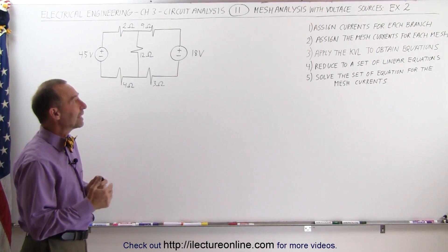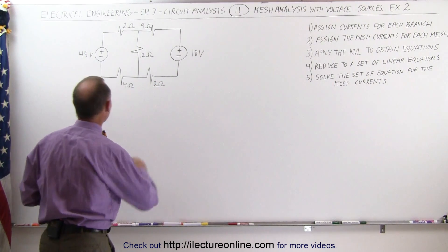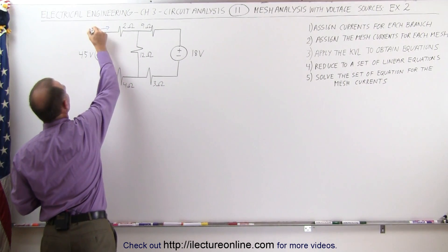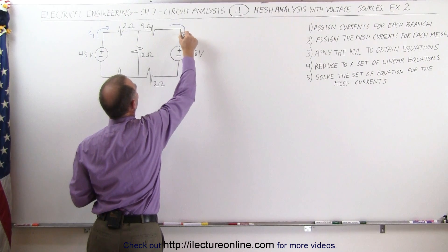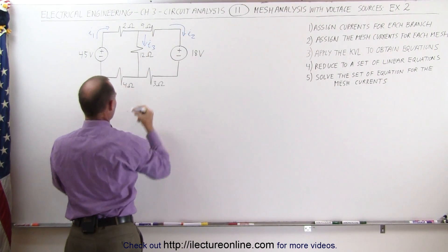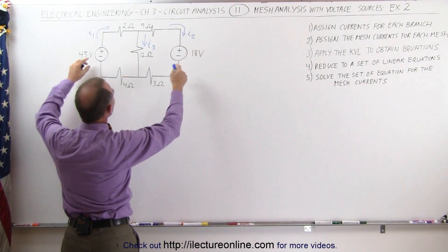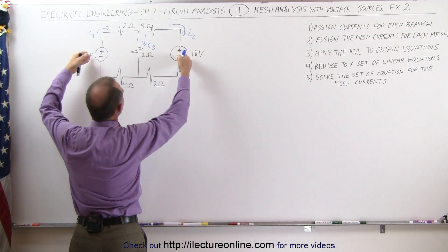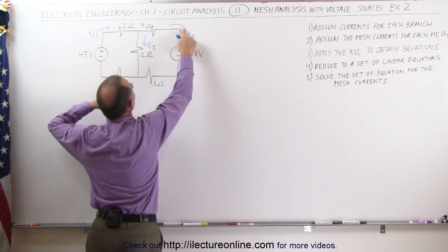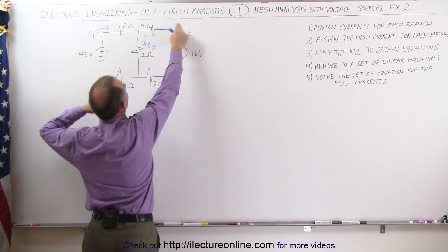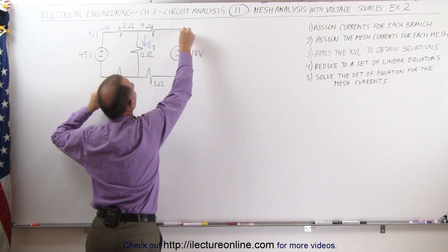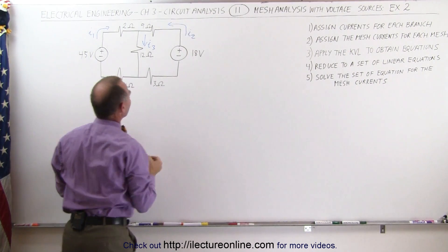Assign currents for each of the branches. We have three branches here. Let's say this is I1, this is I2, and this is I3. Based upon the voltage sources, it looks like the currents will probably flow in this direction and down here. I'm going to change the arrow for I2 in the opposite direction, assuming that will be the more correct direction for current I2.